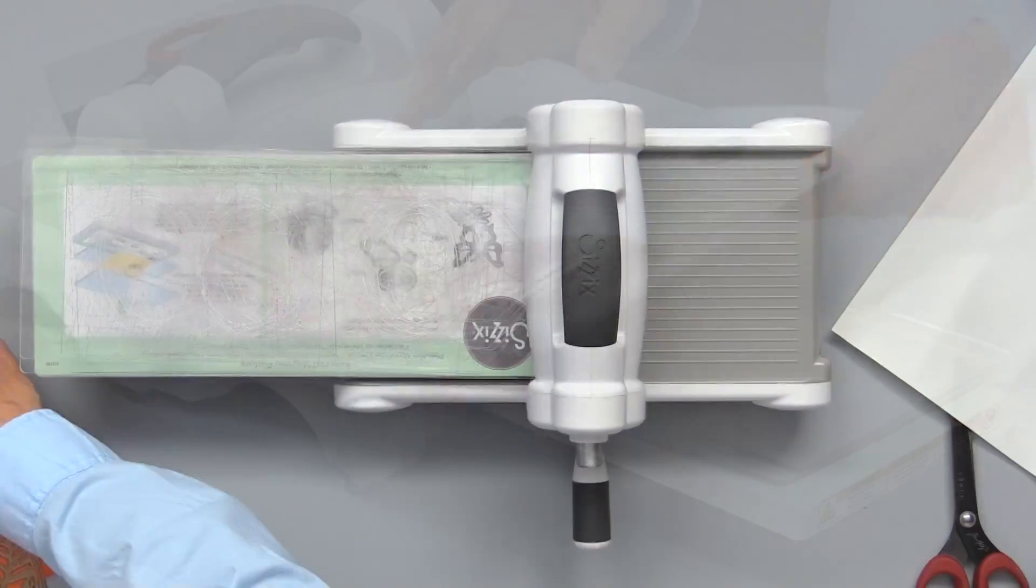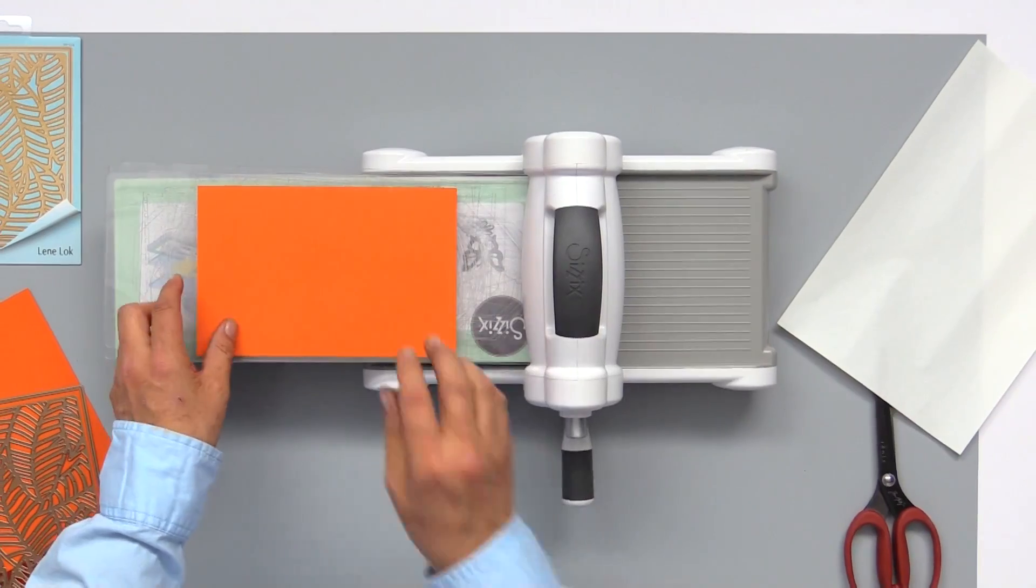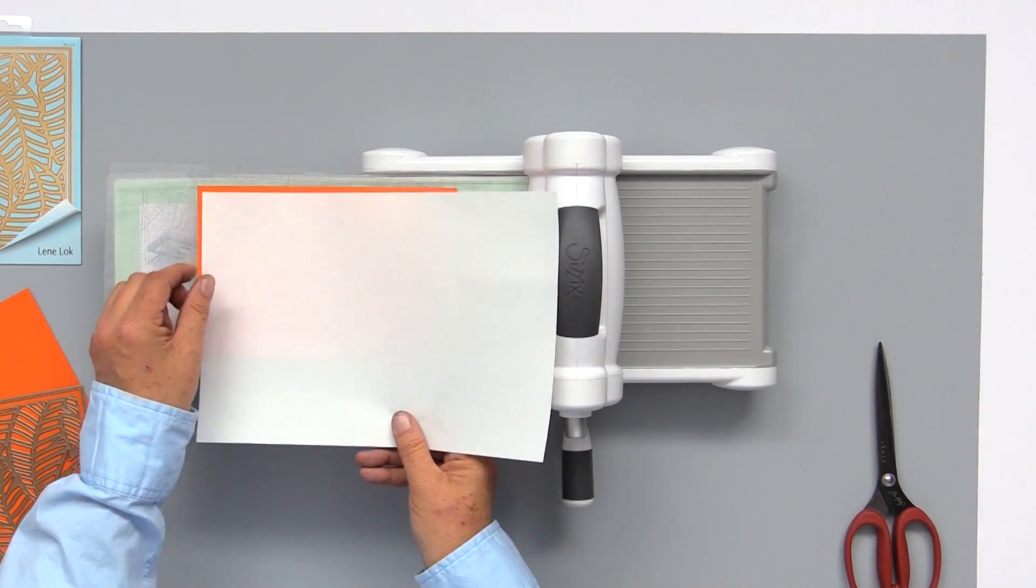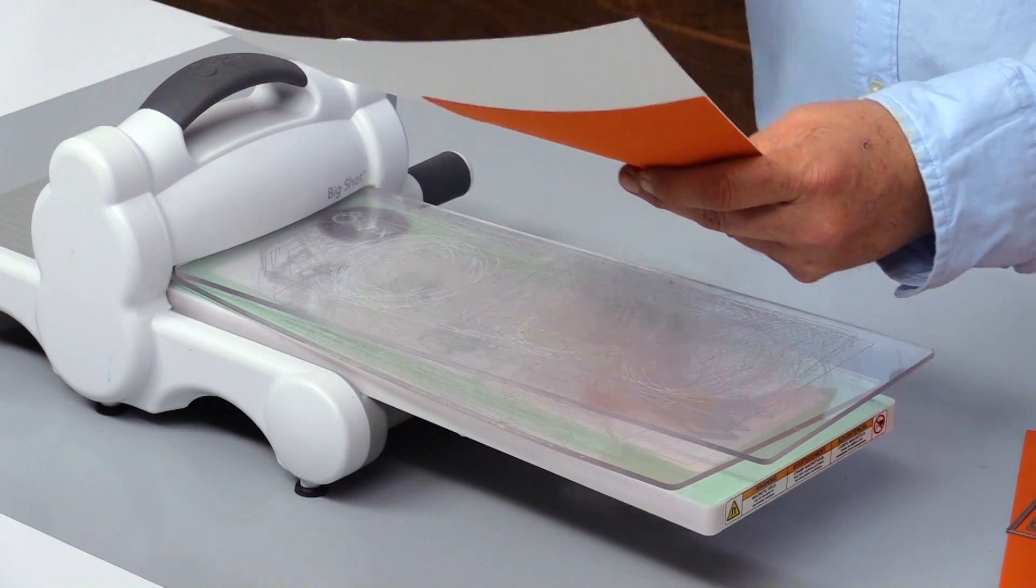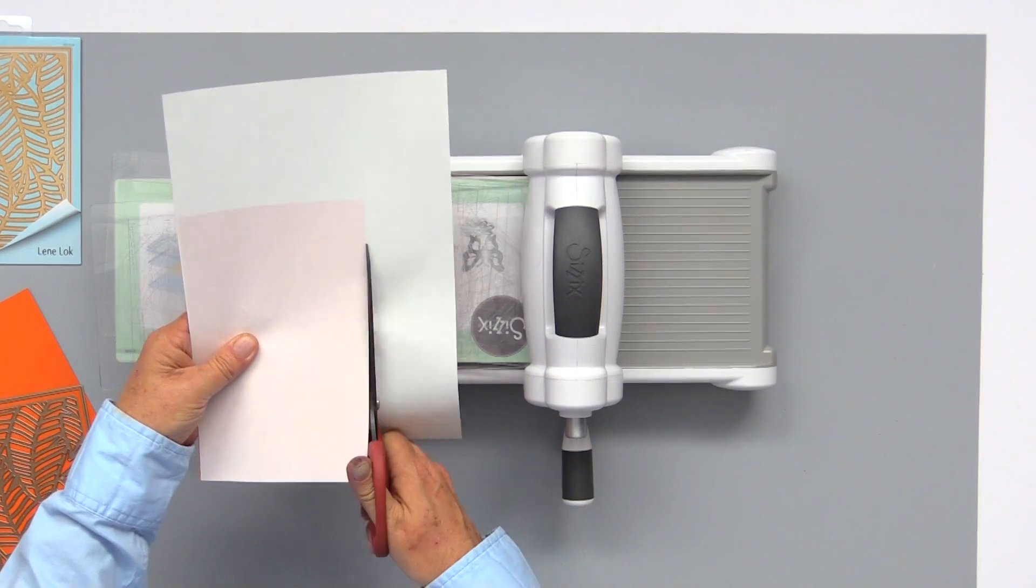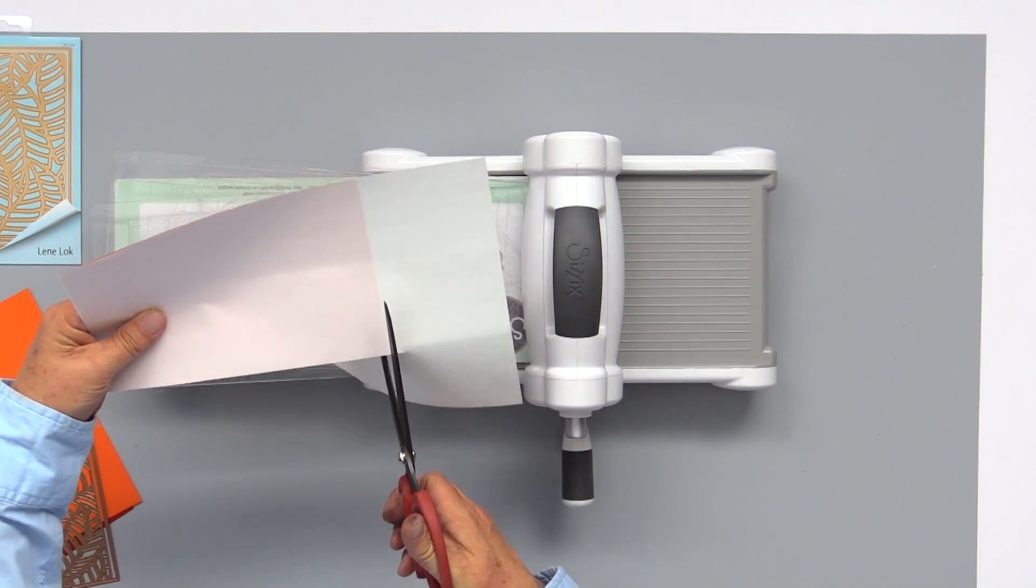This is how you use it. I've got a piece of cardstock here, and I'm going to apply a piece of Stick It to the back of that cardstock. First, I'm going to cut out my Stick It to be the exact size of my cardstock. When you see how this works, it's going to blow your mind.